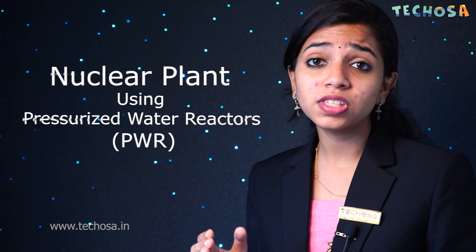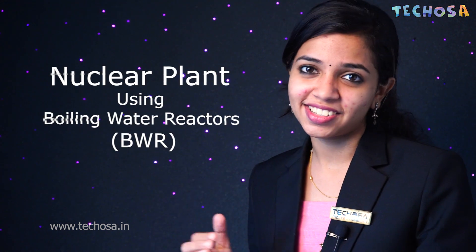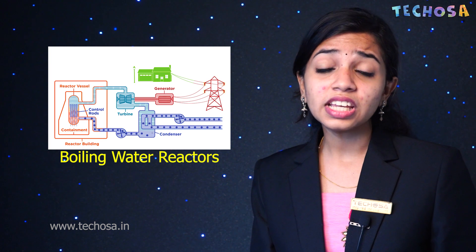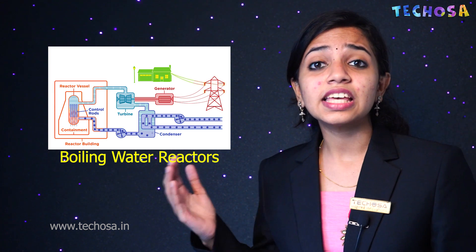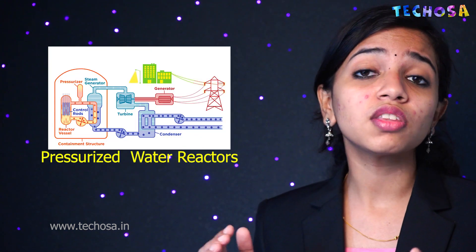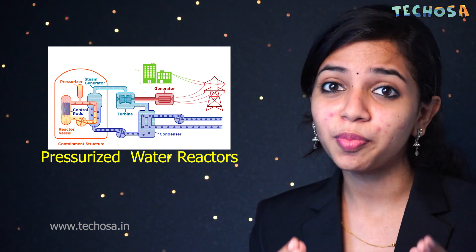There are two types of nuclear power plants: those that use pressurized water reactors and those that use boiling water reactors. In a boiling water reactor, the water is allowed to boil into steam, then it is sent through turbines to produce electricity. Whereas in a pressurized water reactor, the water is not allowed to boil — instead it is held under pressure. As mentioned, nuclear fission produces several million times more energy than any chemical reaction, so any damage to the nuclear power plant can lead to a huge disaster.